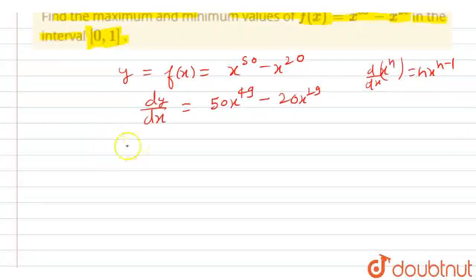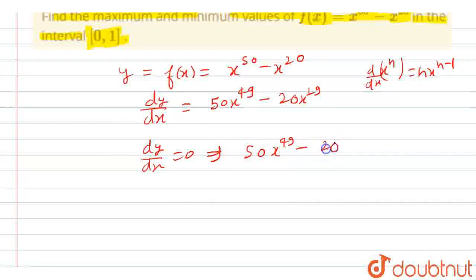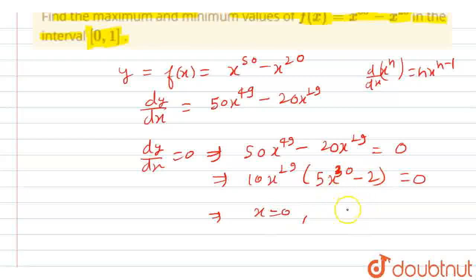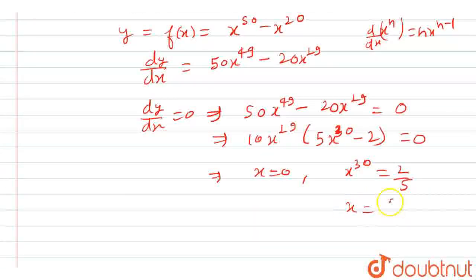For the critical points, we put dy/dx equal to 0. This implies 50x raised to the power 49 minus 20x raised to the power 19 equals 0, which implies 10x raised to the power 19 in bracket (5x raised to the power 30 minus 2) equals 0. So this implies x equals 0, and when the second term is 0, we get x raised to the power 30 equals 2/5, which implies x equals (2/5) raised to the power 1/30.